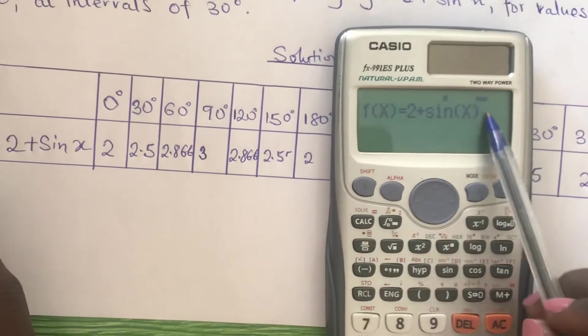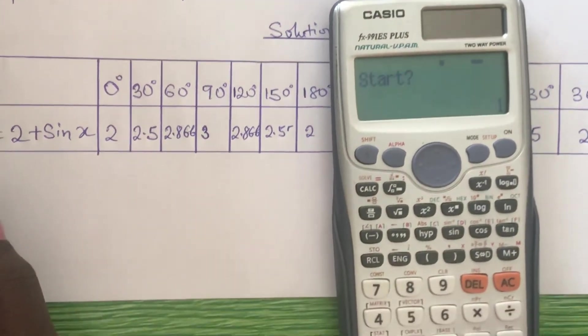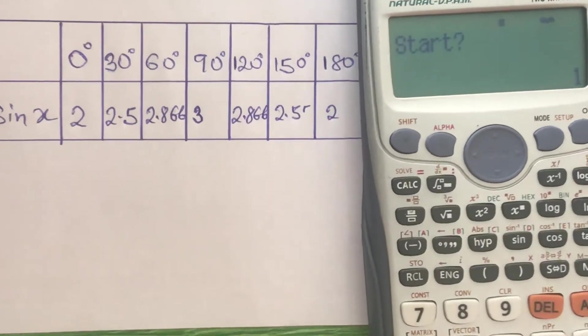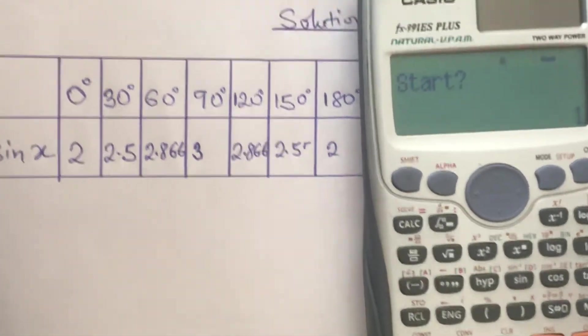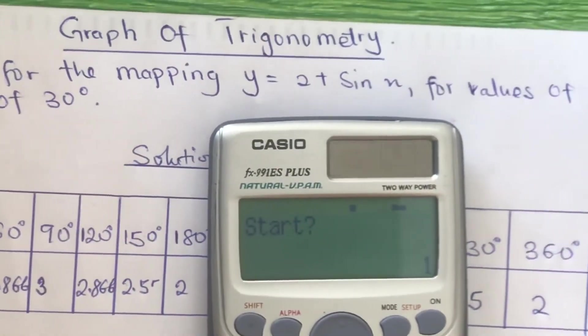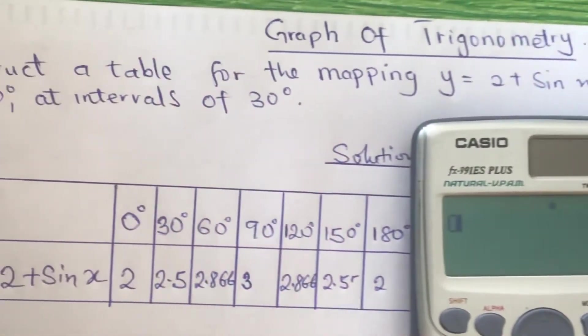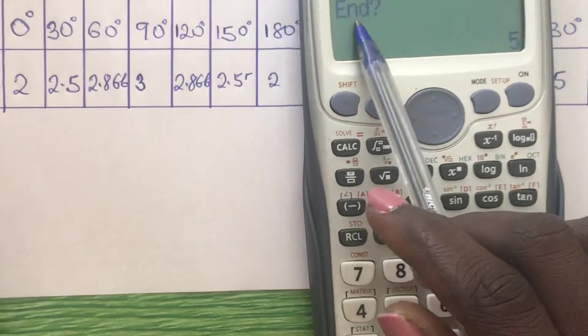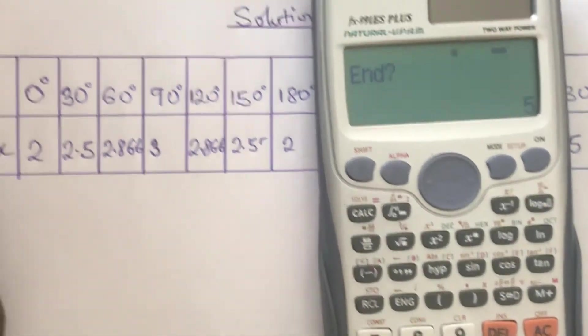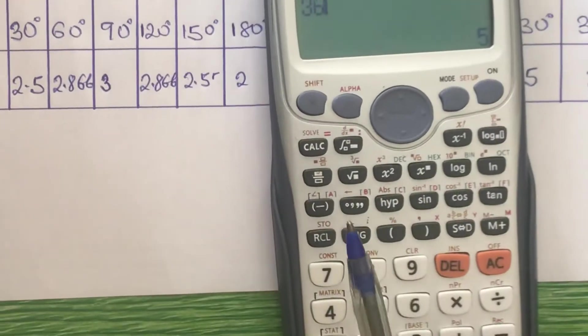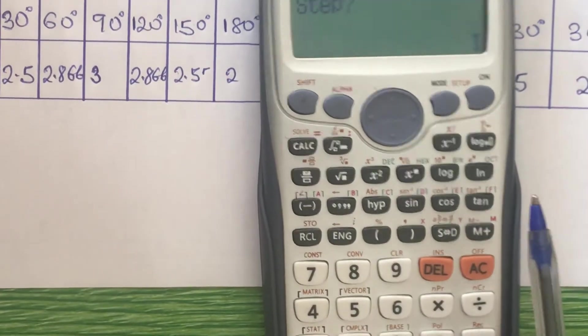After putting in our function, we press on the equal sign. Then the first one is start. We are starting from 0 degrees, so you press 0. Then equal to, then end will come, and we are ending on 360 degrees. So let's punch 360. Equals.